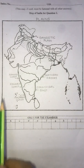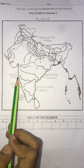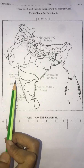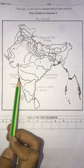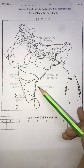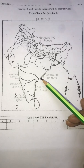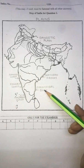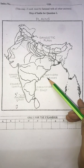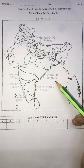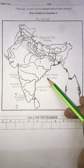Now let us come to the coastal plains. Coastal plains are those plains located on the coast of the country. We have three coastal plains on the western coast and two on the eastern coast. Let us begin with the eastern coast. Here we have two coastal plains: the Northern Sircars and the Coromandel coast. You can notice that both begin with the letter C — a useful tip to remember them.